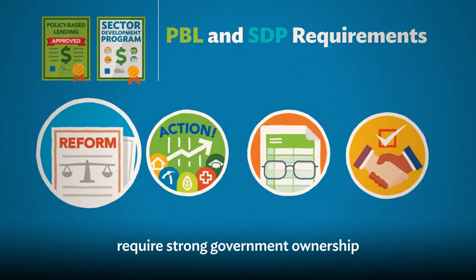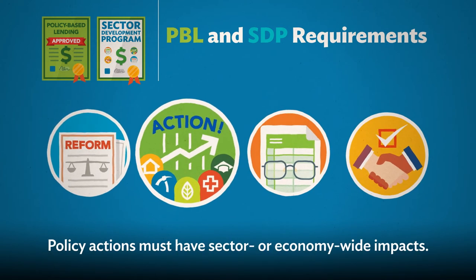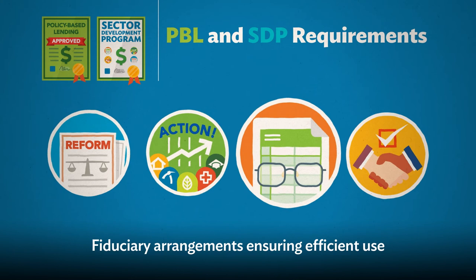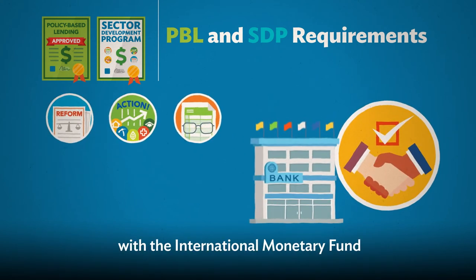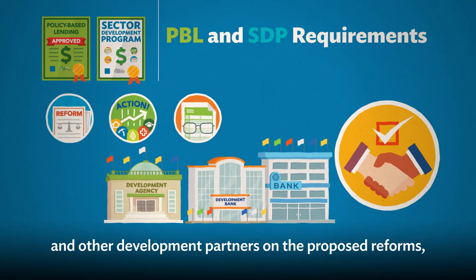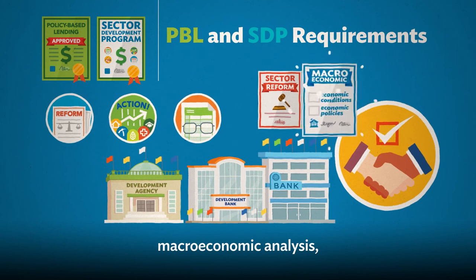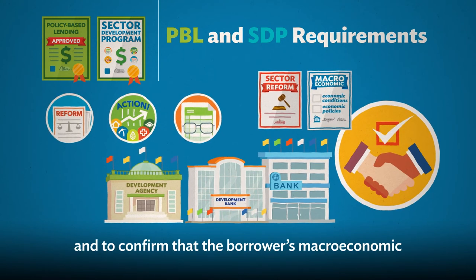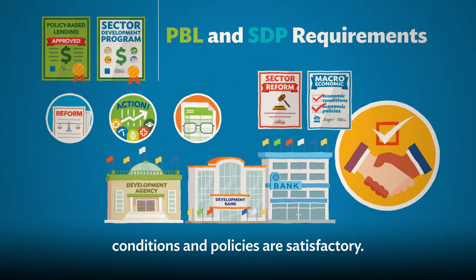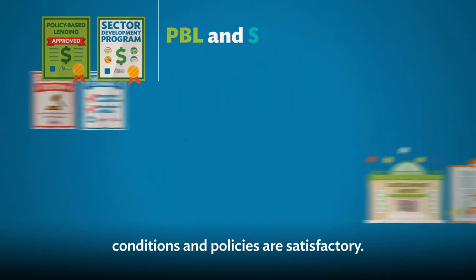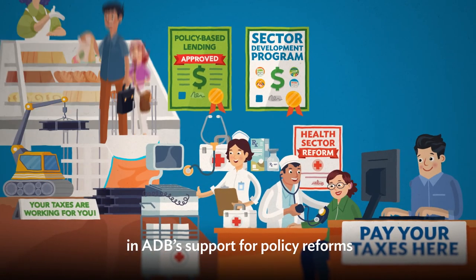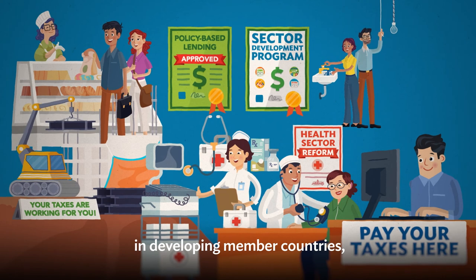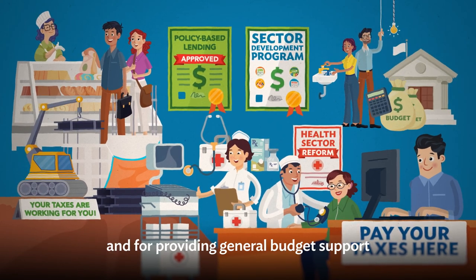All types of PBL, including SDP, require strong government ownership and commitment to reform. Policy actions must have sector or economy-wide impacts. Fiduciary arrangements ensuring efficient use of resources should be in place. There must be close coordination with the International Monetary Fund and other development partners on the proposed reforms, macroeconomic analysis, and to confirm that the borrower's macroeconomic conditions and policies are satisfactory. PBL and SDP are key tools in ADB's support for policy reforms in developing member countries, and for providing general budget support for countries' financing needs.